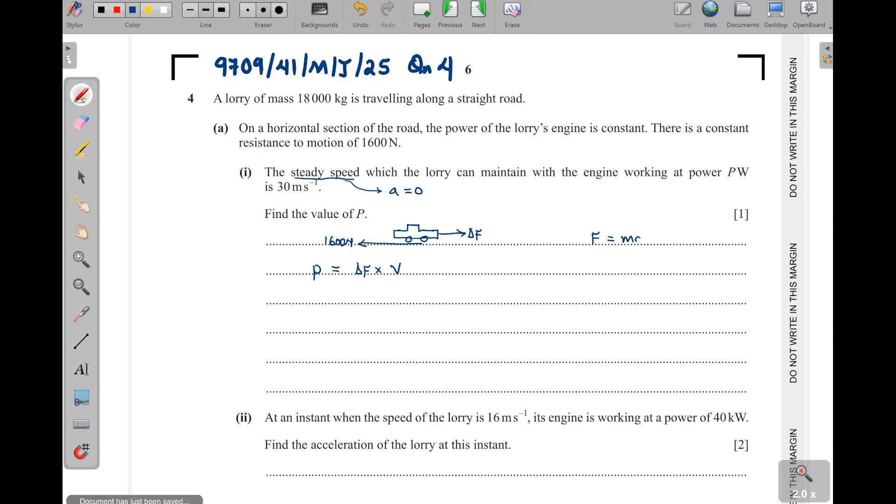Now using F equals MA, because there is motion here, we shall have the driving force, which is taking the car this side, then subtract the resistance force 1,600. Then this one is equal to M, so the mass is 18,000, then times acceleration, which is zero. So that means the driving force is equal to 1,600. In other words, for a steady speed, the driving force will always be equal to the resistance force. Now we shall have our power, which will be 1,600 times the speed, which is 30. That will be 48,000 watts.